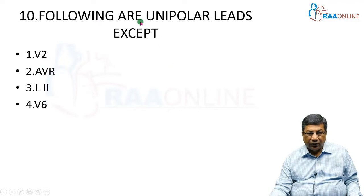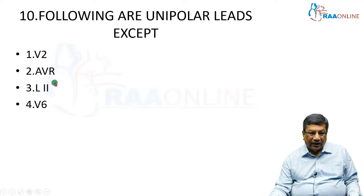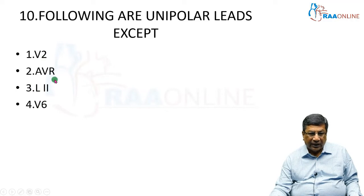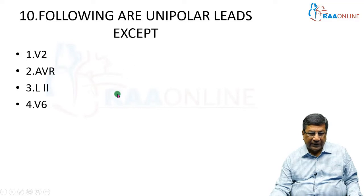Which of the following are unipolar leads — except: V2, aVR, L2, or V6? Here L2 is a bipolar lead. All the other three answers are unipolar leads. So the except lead is L2, which is a bipolar lead.